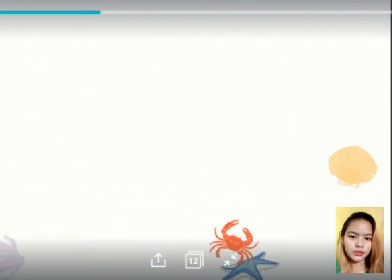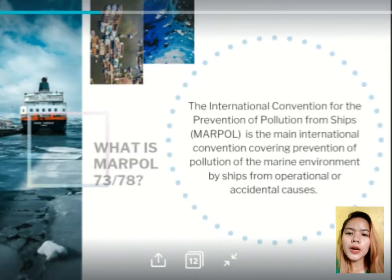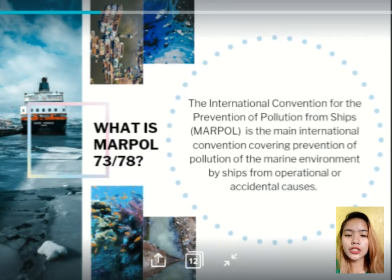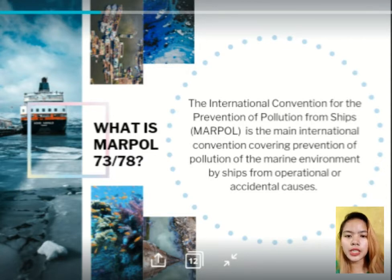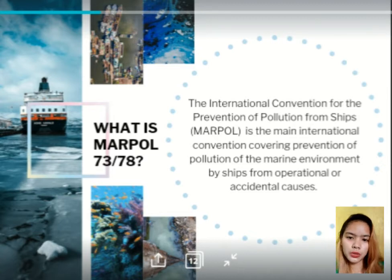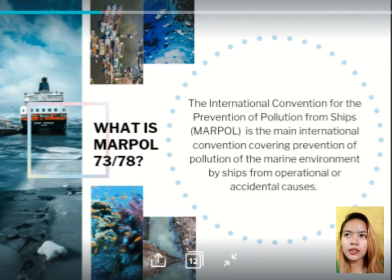So what is MARPOL? MARPOL 73/78 is the international convention for the prevention of pollution from ships and its most dominant international marine convention, created by the International Maritime Organization, also known as IMO, in order to prevent pollution from ships which may manifest as a result of both accidental and operational causes.